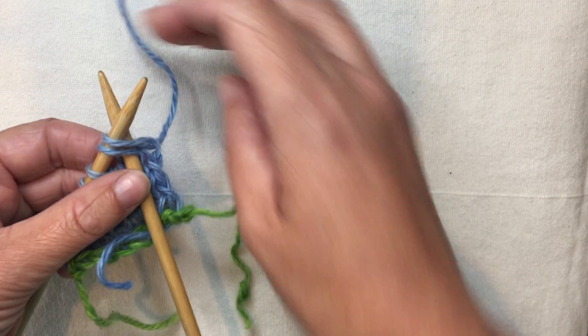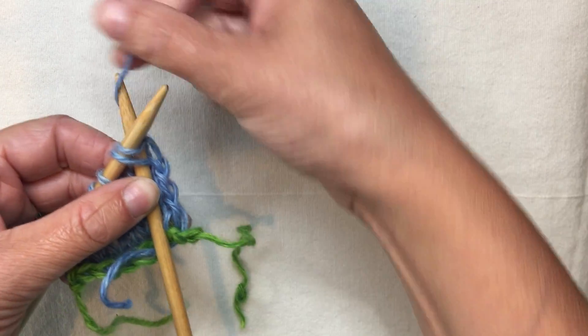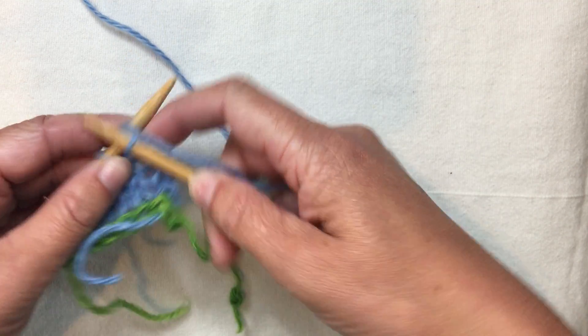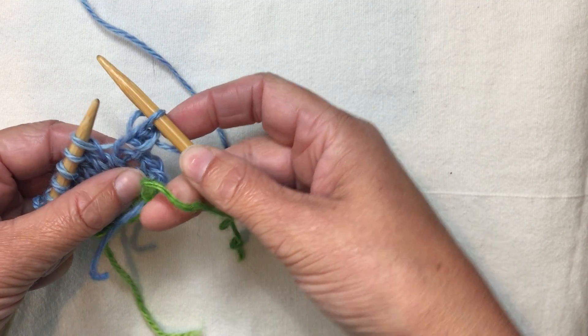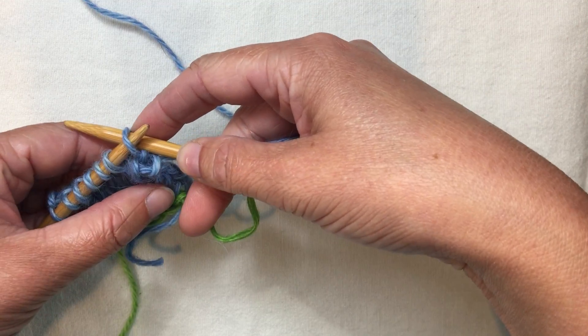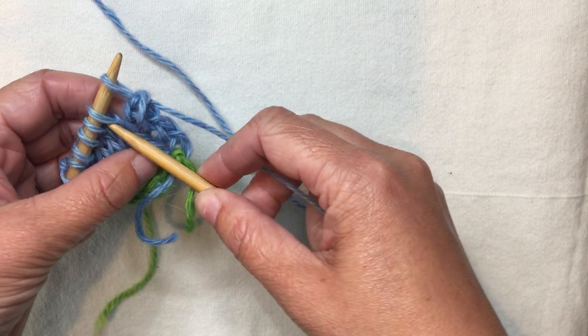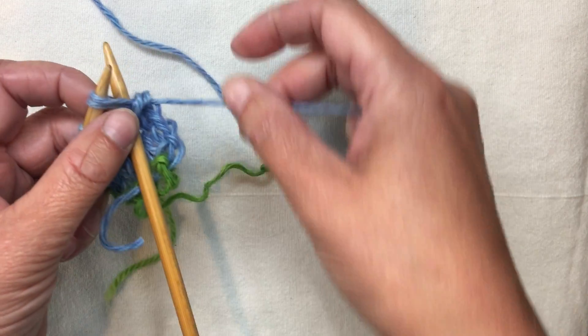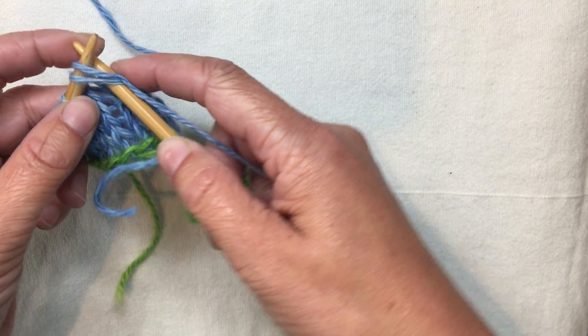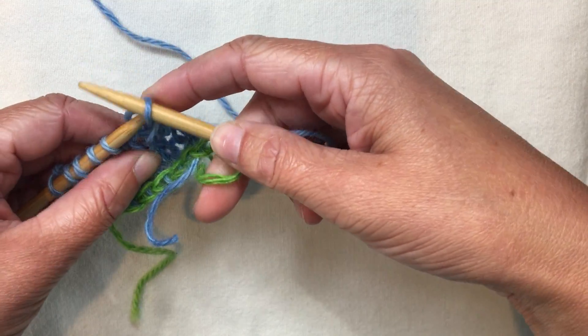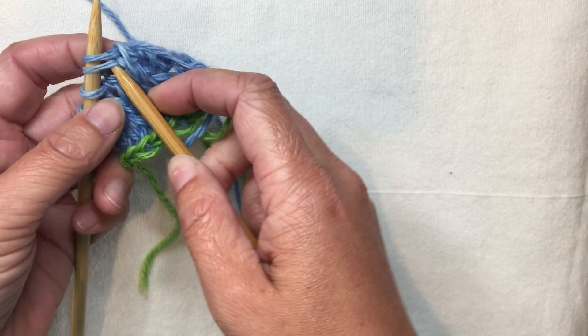You knit two together and then you take the resulting stitch and return it to the other needle. I like to return it like this so my needle tips are facing each other and then you knit two together and return that stitch to the other needle and you continue that across the way.